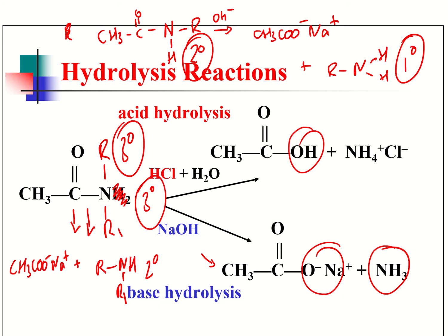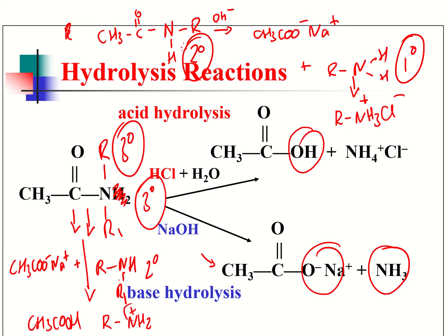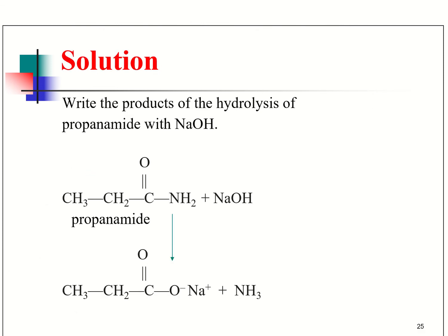For acid hydrolysis of a secondary amide, you would get R-NH₃⁺ — a primary ammonium ion. For acid hydrolysis of a tertiary amide, you get the carboxylic acid plus R-NH₂⁺ and R₁. So you get the salt of the secondary amine in that case, and the salt of the primary amine in the other. It depends very much on what you start off with. There are a couple of questions on this.